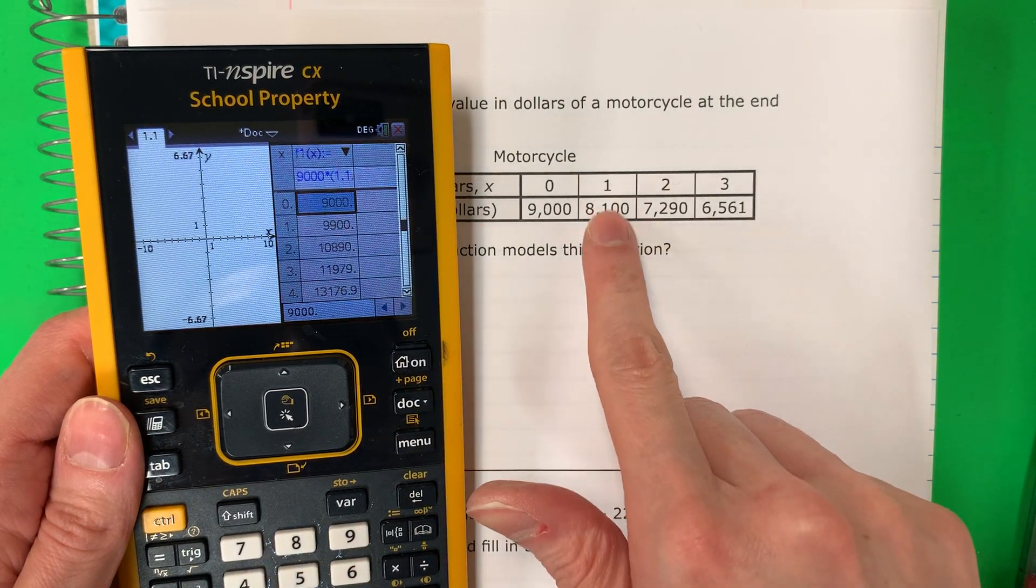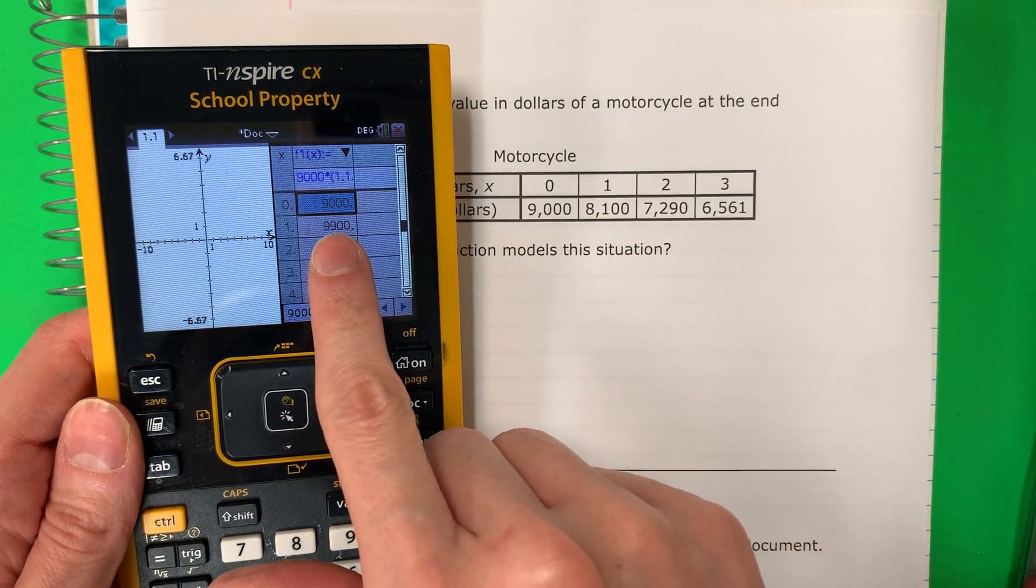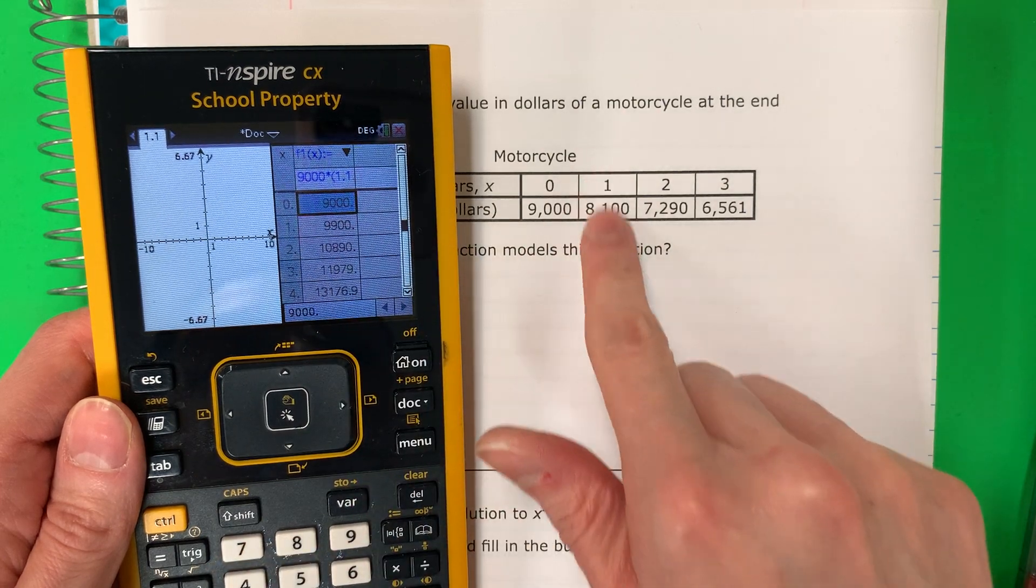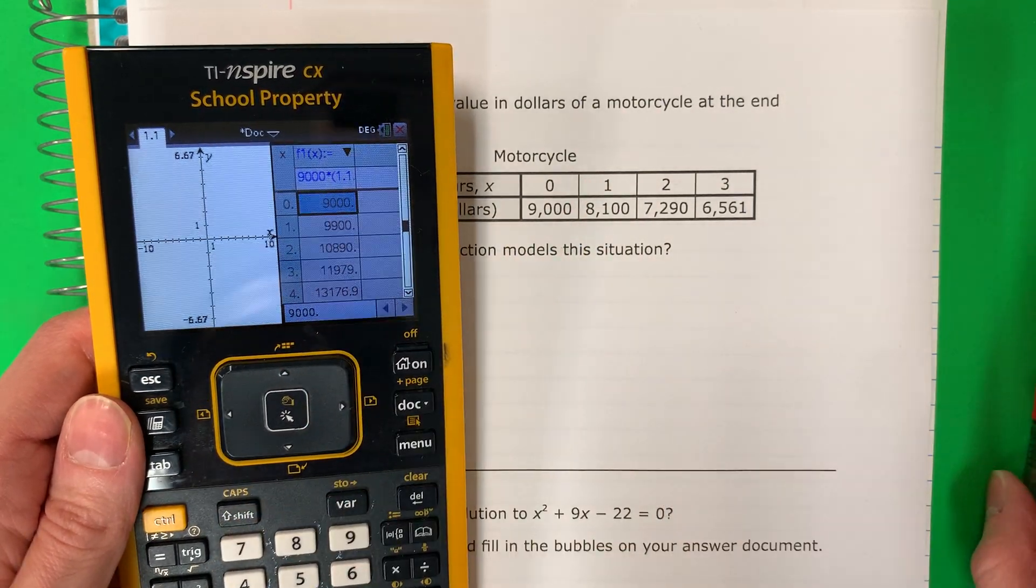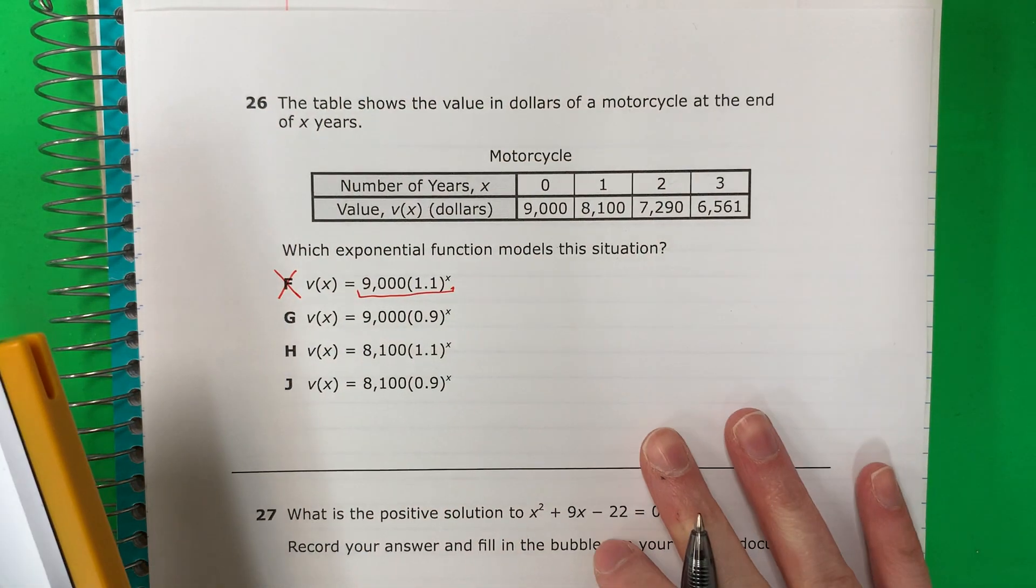Zero, 9,000. Good. One. Here 8,100. Here 9,900. So this is different. Esta es diferente. So this is no good. No es bueno. I need all of it the same. Necesito todo igual.